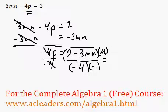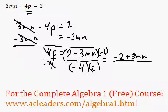I'll distribute the negative 1 over here. And get negative 1 times 2, negative 2, negative 1 times negative 3mn, plus 3mn, and negative 4 times negative 1, just positive 4.